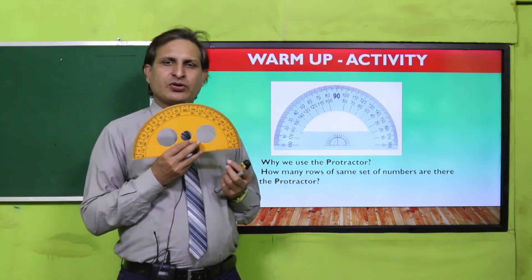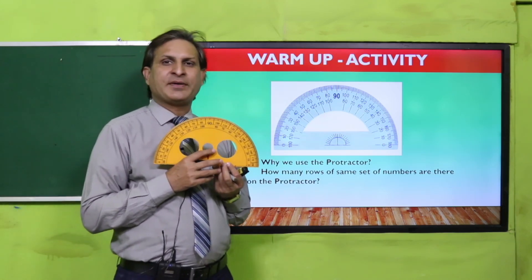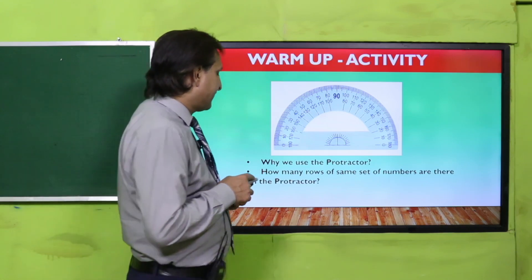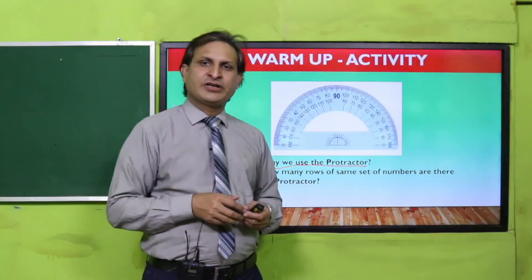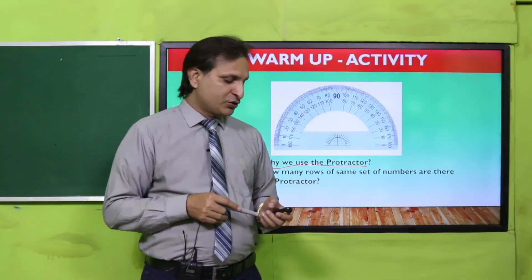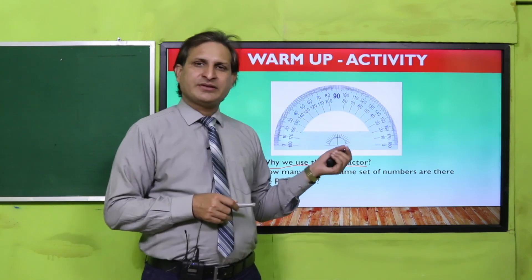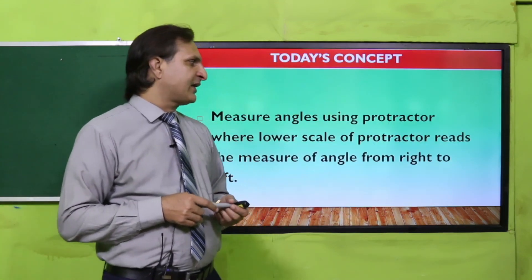Check whether the scales on both protractors are the same — is the upper scale the same, and is the lower scale the same? After observing, write the answers to these questions in your notebook: Why do we use the protractor? How many rows of the same set of numbers are there on the protractor? Observe and write the answers, then show your notebook to your teacher.